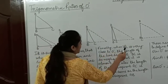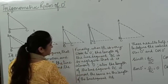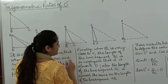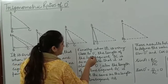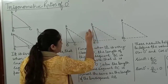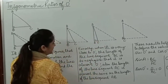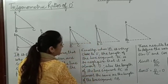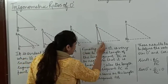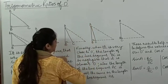Finally, when angle A is very close to 0 degrees, the length of the line segment BC is so negligible — almost 0 — which means C almost coincides with B. Since C almost coincides with B, the length of the line segment AC is almost the same as the length of the line segment AB.